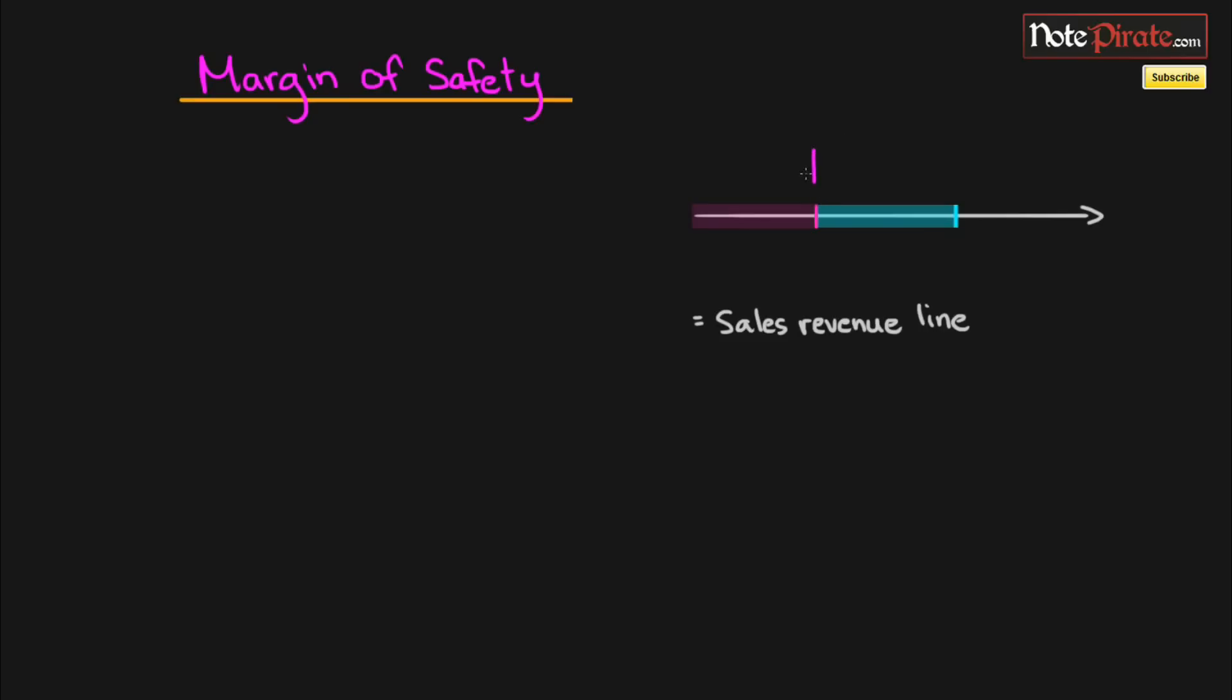The first line right here represents our break-even point, so at that level of sales revenue we've achieved our break-even. As for the cyan or neon blue line, that's going to be our planned sales revenue. The cushion between our planned sales revenue and our break-even